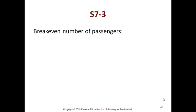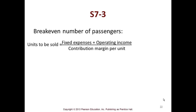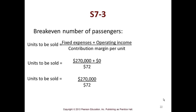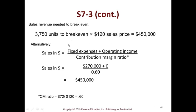Let's try S7-3 on your own: break-even number of passengers. Using the equation, the units to be sold comes out to 3,750 passengers. Go back to S7-1 and S7-2 and then do S7-3 after you watch this video — make sure you can do this on your own. This is a simple problem, but it uses all the topics in this objective. The sales revenue needed to break even is units times sales price. Alternatively, using $270,000 plus zero operating income divided by 60% gives you $450,000.